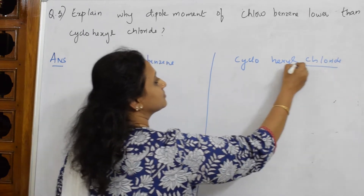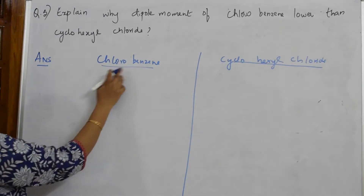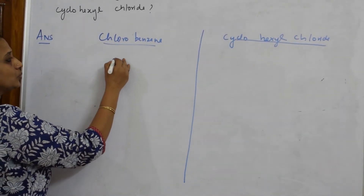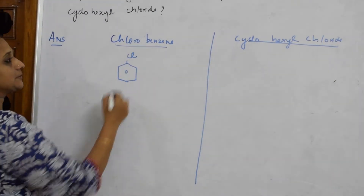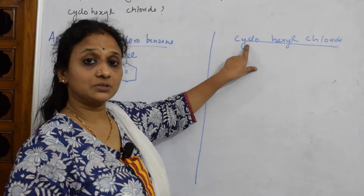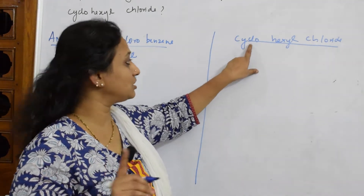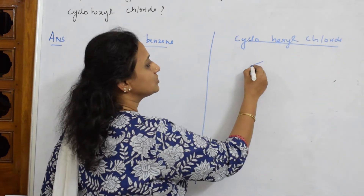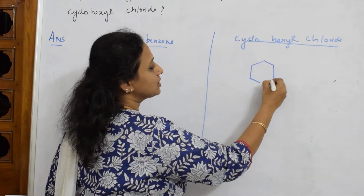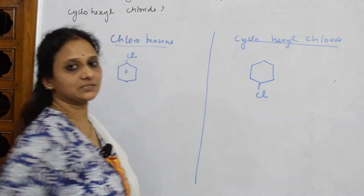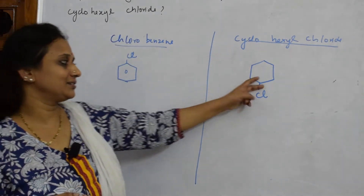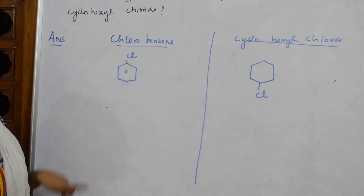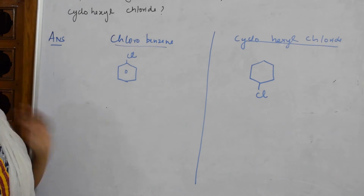Let us write the structures. Chlorobenzene is a benzene ring with Cl attached. For cyclohexyl chloride — remember, in a cyclo compound there are no pi bonds — so this is cyclohexyl chloride (C6 with chloride). The only difference is: chlorobenzene has pi bonds, cyclohexyl chloride does not.